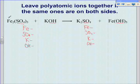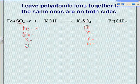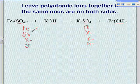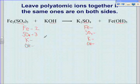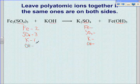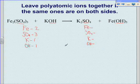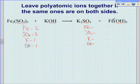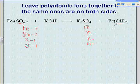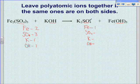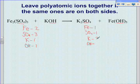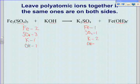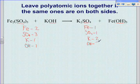Then we count how many we have of each. Here we have two irons. This three tells us that we have three sulfates. We have one potassium and one hydroxide on the left side. On the right side, we have only one iron, one sulfate, two potassiums, and three hydroxides.